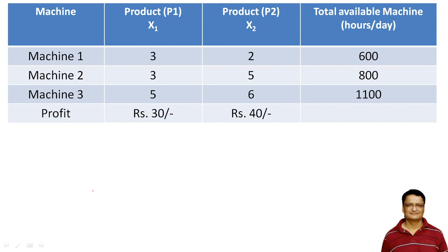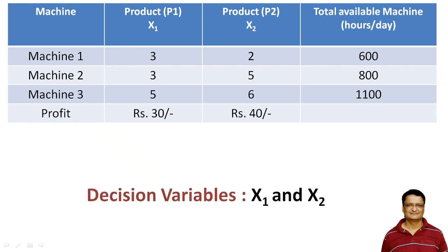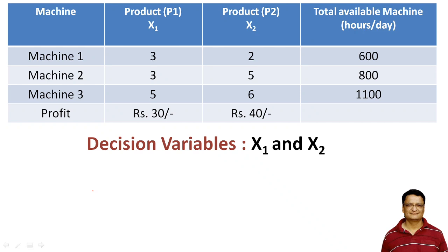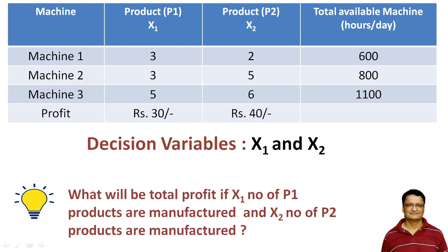We can represent the table in this way. The decision variables are x1 and x2 — that is, the amount of product P1 and the amount of product P2 in kg to be produced; we call them decision variables. Here is a question: what will be the total profit if x1 amount of P1 and x2 amount of P2 are manufactured? The profit per kg is given by the figures shown. Pause the video and think about it.